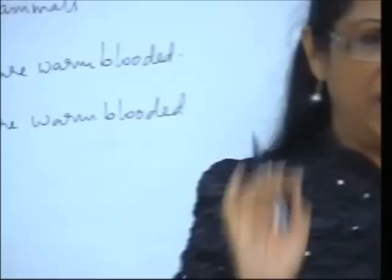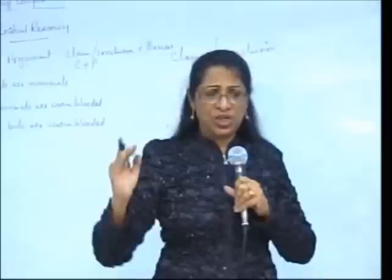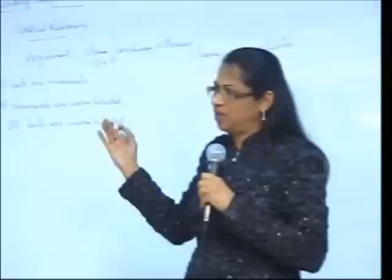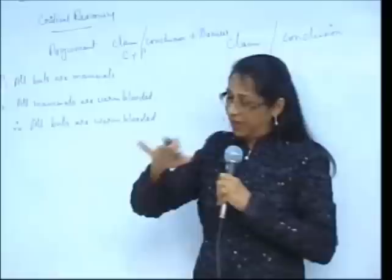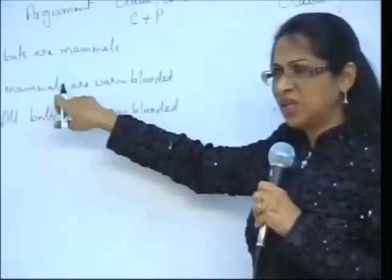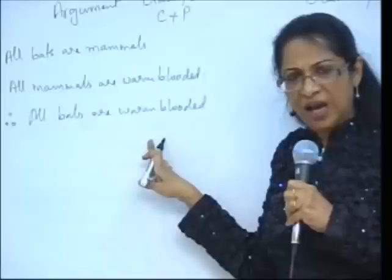Now, let's say I present this argument before you and ask you to critically evaluate it. What is the meaning of critical evaluation? You have to study the conclusion and ask yourself: do I believe this conclusion based on the facts given? Do you believe that all bats are warm-blooded based on these facts? If premise one is 100% true and premise two is 100% true, then there cannot be any doubt about the conclusion. This is 100% acceptable.